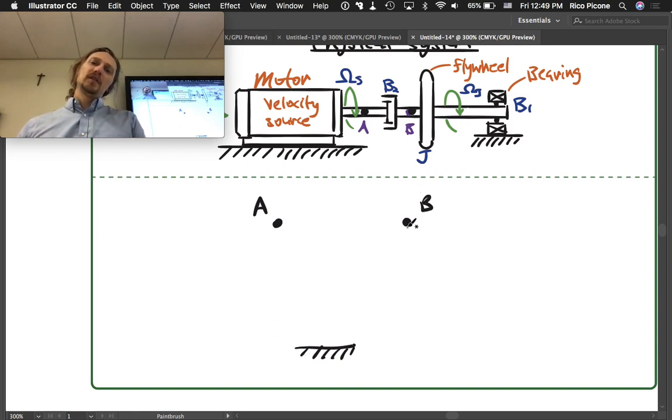For J, J's velocity is referenced to ground, so there's our J.